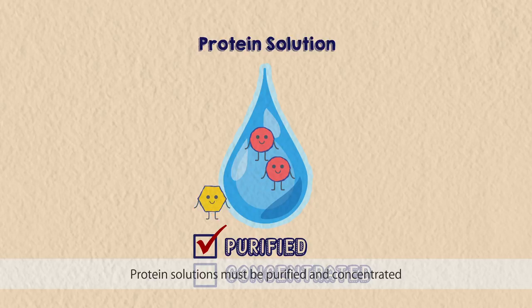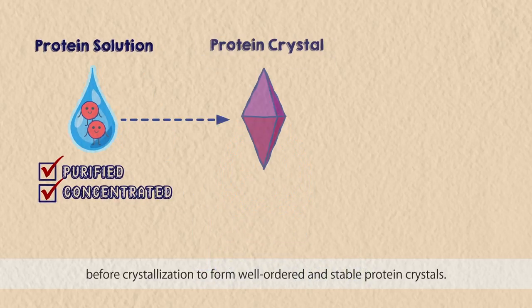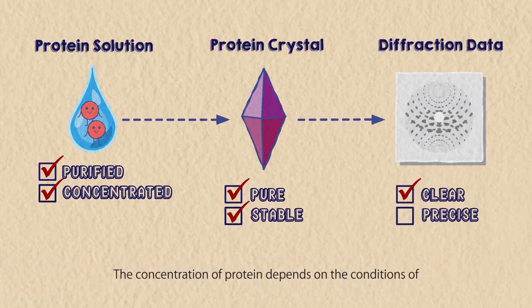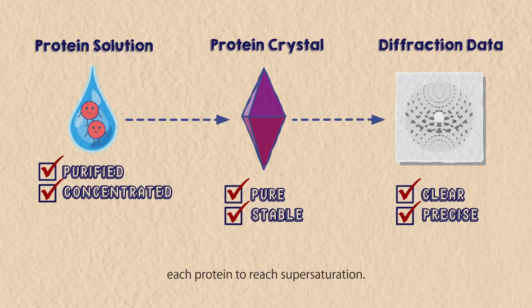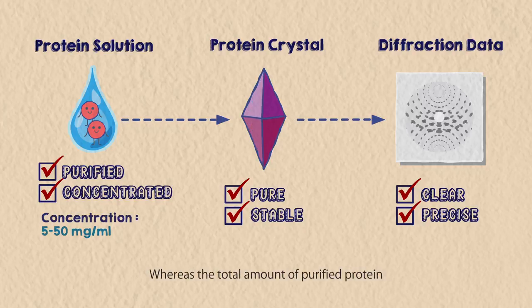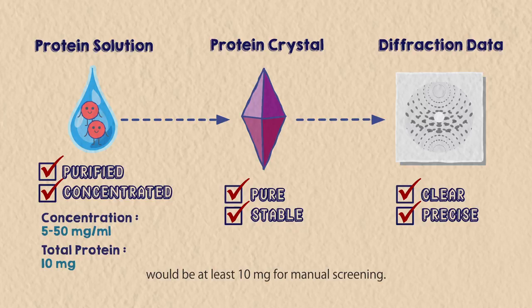Protein solutions must be purified and concentrated before crystallization to form well-ordered and stable protein crystals. The concentration of protein depends on the conditions of each protein to reach supersaturation. It is usually advised to start between 5 to 50 milligrams per milliliter. Whereas the total amount of purified protein depends on the number of crystallization conditions to be tested, the recommended amount would be at least 10 milligrams for manual screening.